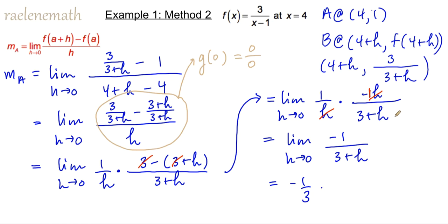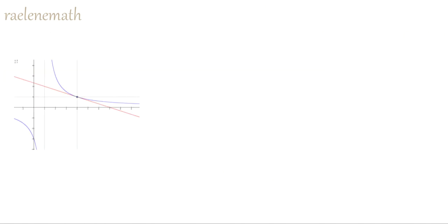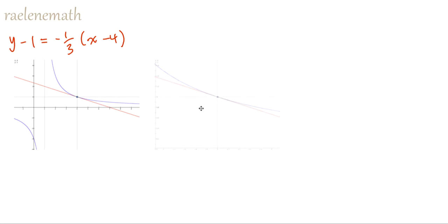We've already confirmed graphically that we had negative 1 third as the slope, but here's just another reminder of that picture. We've got the tangent line whose equation was given by y minus 1 equals negative 1 third times x minus 4. When we zoom in far enough, we start to see that the line and the curve begin to look alike.